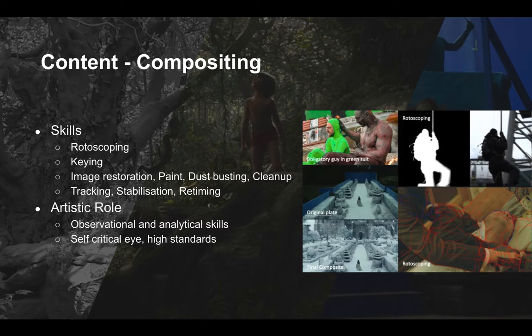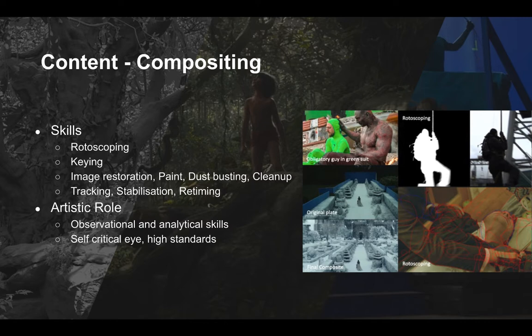In your portfolio you want to show skills in image restoration, dust-busting, wire removal, paint and replacement work, and cleanup. You should also highlight shots showing skill in rotoscoping, keying, de-graining, tracking, and retiming. Often compositors have to work with poor footage and rebuild it to suit the shot — you could work with poorly shot footage and try to restore it or create mattes for it quickly and accurately. This may not be glamorous, but good quality mattes and plate restoration are vital for compositing, and doing this highlights your keen observational and analytical skills and your meticulous nature. If you have strong examples, you could also highlight more advanced skills such as 2.5D projection, multi-pass compositing, and 2D effects work.